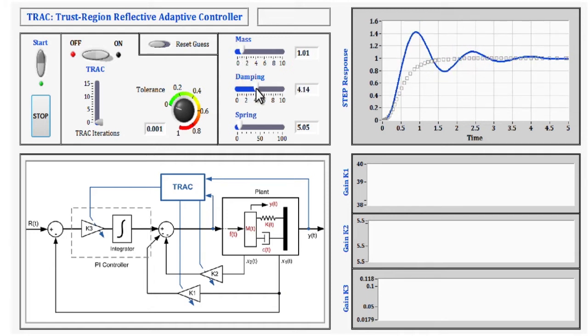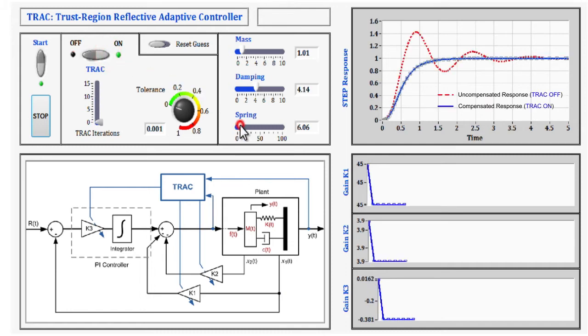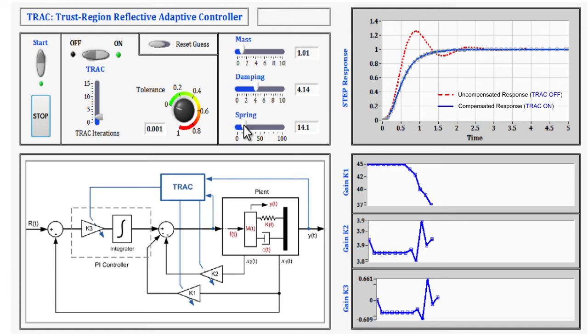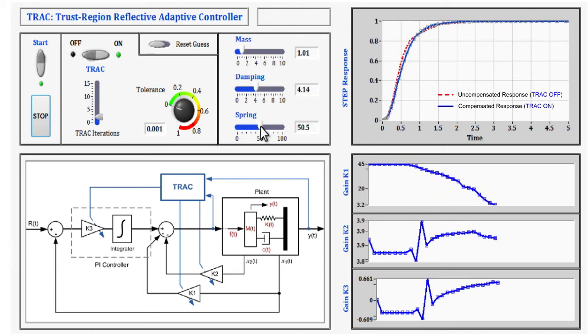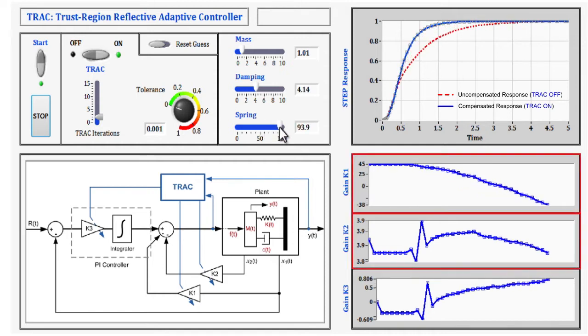However, if TRAC is turned on, the change in the output signal resulting from a change in the plant parameters will be completely absorbed by TRAC via an automatic retuning of the gains as can be seen in these plots for gains K1, K2, and K3.